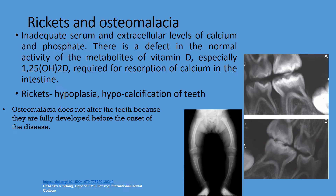Rickets and osteomalacia. Inadequate serum and extracellular levels of calcium and phosphate are hallmarks of this disease. There is a defect in the normal activity of metabolites of vitamin D, especially 1,25-dihydroxycholecalciferol, which is required for resorption of calcium in the intestine. In rickets, there is hypoplasia and hypocalcification of teeth, whereas osteomalacia, which happens in adults, generally does not alter the teeth because they are fully developed before the onset of the disease.